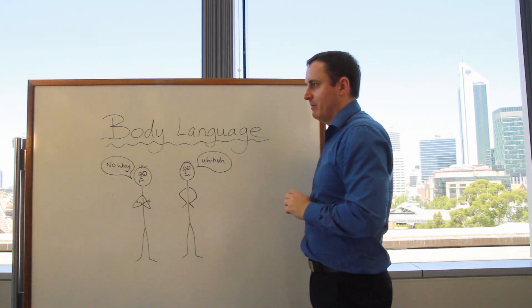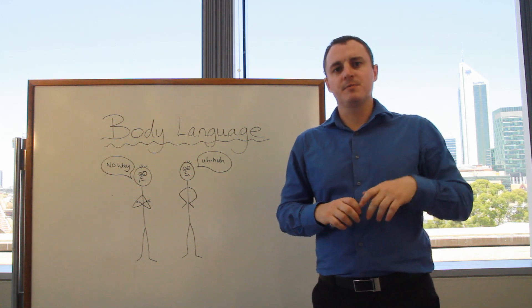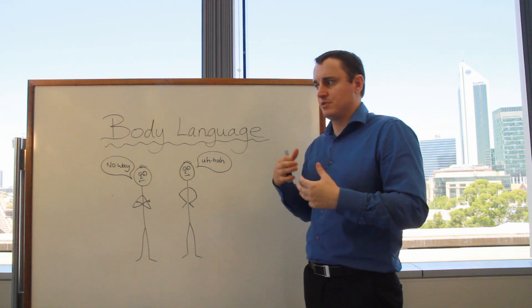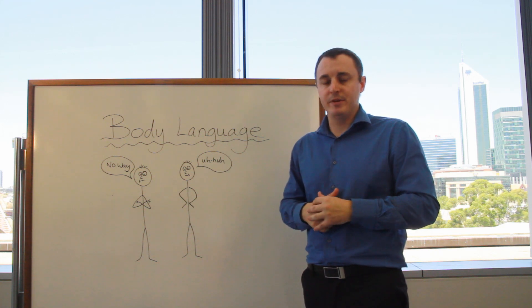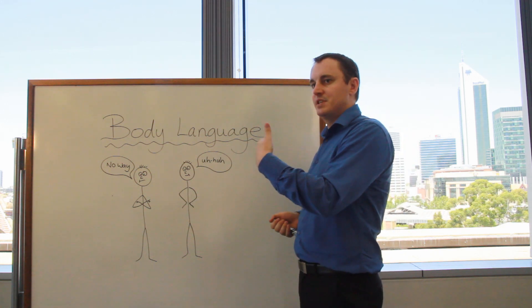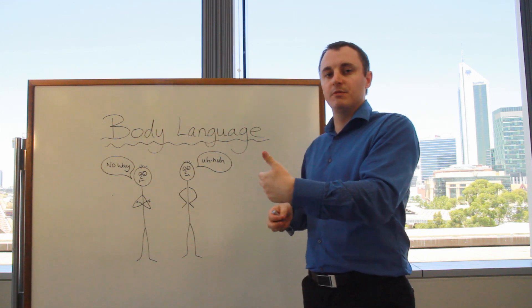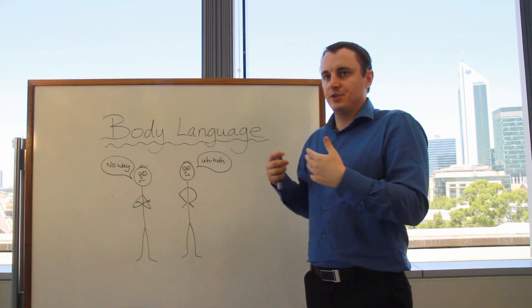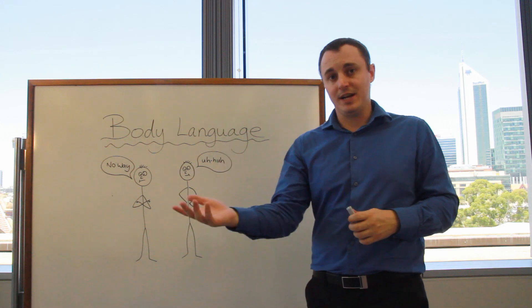The other important thing with facial expressions is being able to, especially with students with disabilities and social and emotional issues that come with, for example, Asperger's and ASD, being able to predict and intervene early before problems arise, if students are starting to get angry, if they're starting to get frustrated.